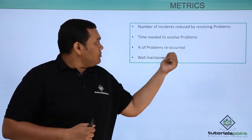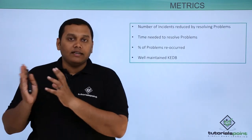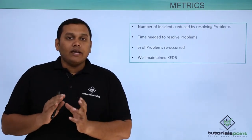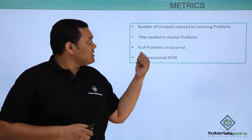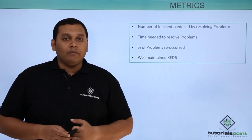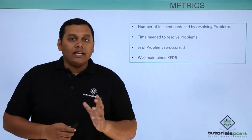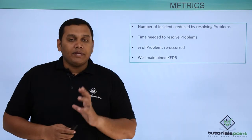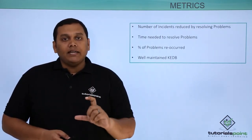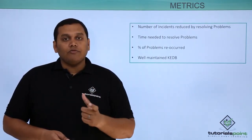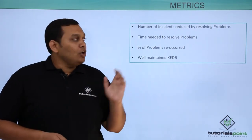Percentage of problems that reoccur, and also the incidents which became problems, is considered one of the metrics in problem management. Additionally, maintaining and updating the known error database (KEDB) is also one of the key metrics in problem management.